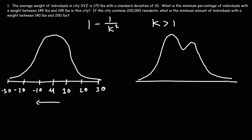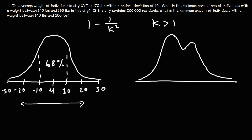You could use the empirical formula to calculate the proportion of data within one standard deviation of the mean. Within two standard deviations of the mean, if you have a standard normal distribution, it's 95%. And within three standard deviations of the mean, it's 99.7%.